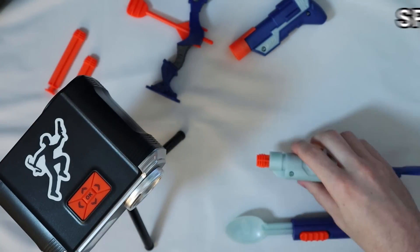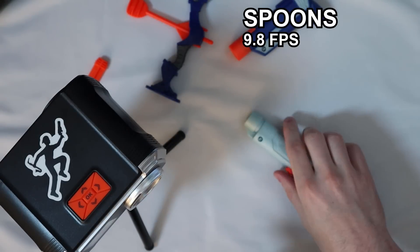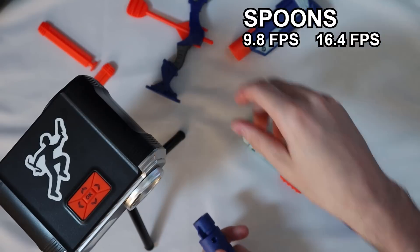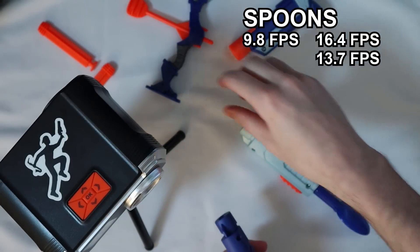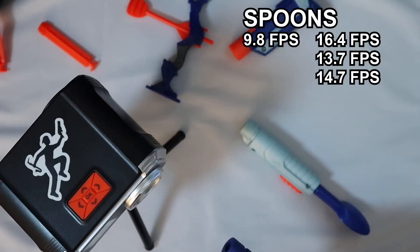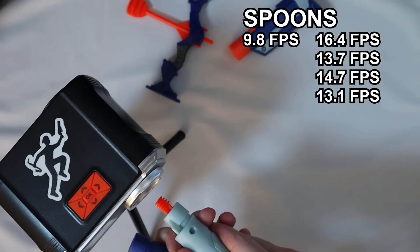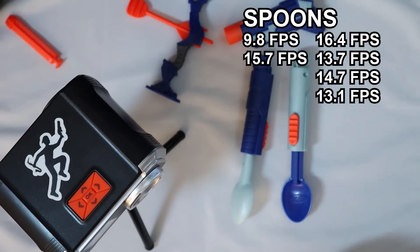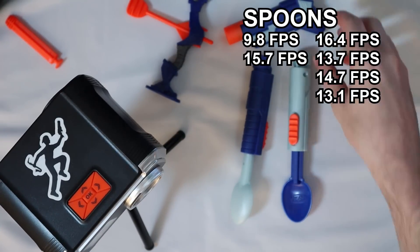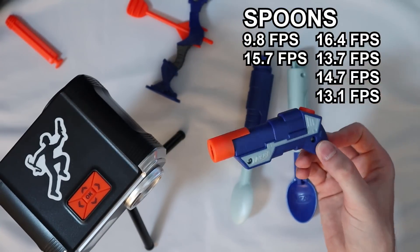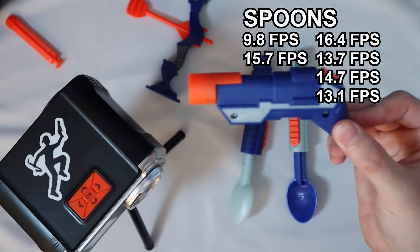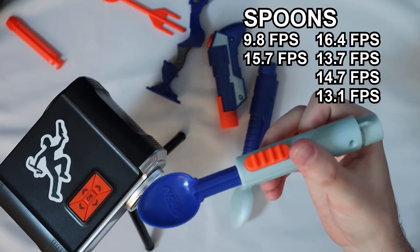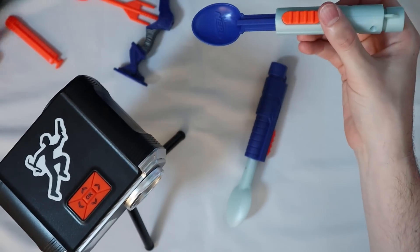All right. Let's test the spoons. At least this one is easier to aim with. 9.8. 16.4. 13.7. 14.7. 13.1. 15.7. I mean, on par, maybe slightly better than the dart blaster. Which is not a good look for the thing that's explicitly called a dart blaster. When your spoon is firing better. Scoopity scoop. You are now poop.